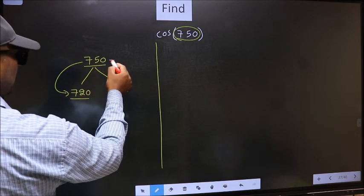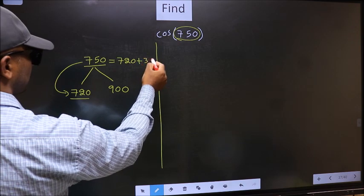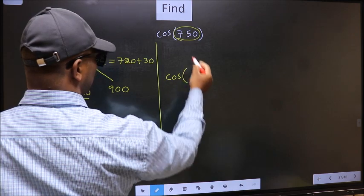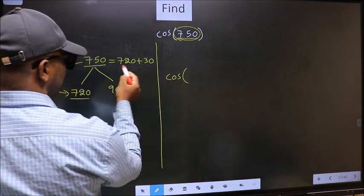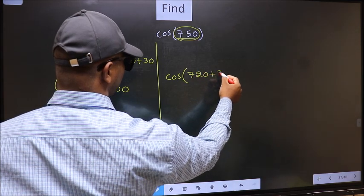So 750 now should be written as 720 plus 30. So this will become cos. In place of this, now we should write 720 plus 30.